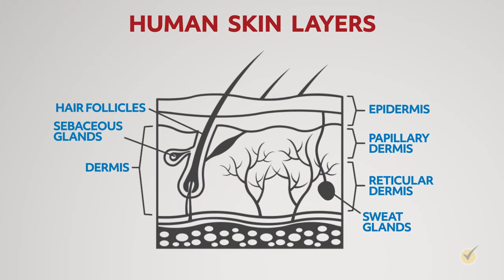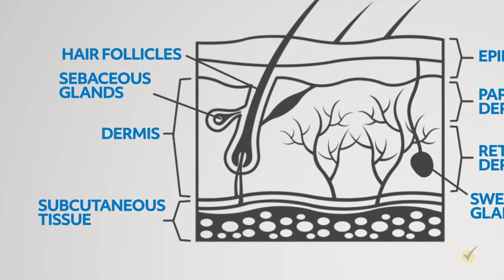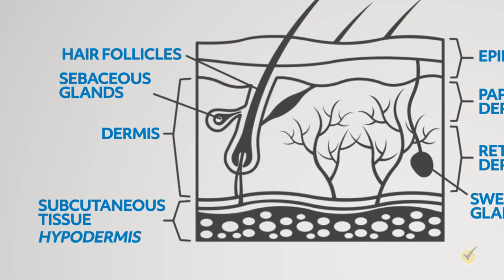Although not technically part of the skin, the subcutaneous tissue directly underneath the dermis is often included as the innermost layer of the skin. Also called the hypodermis, it is composed mostly of adipose tissue and functions as fat storage, cushioning, and insulation for the body.